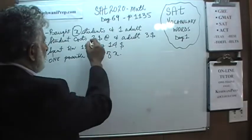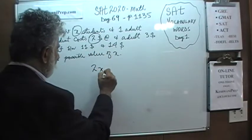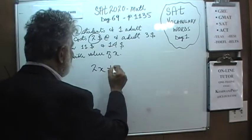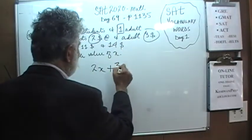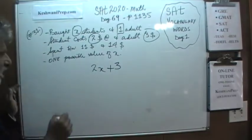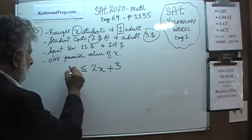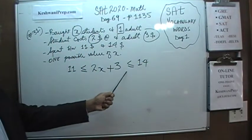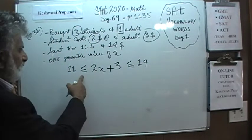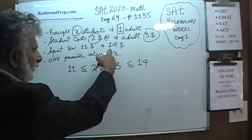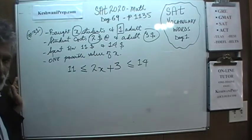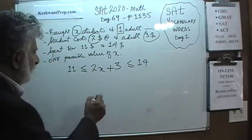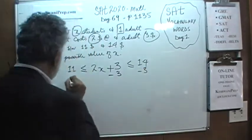If we are going to buy X students and each one of them cost $2, we are going to spend 2 times X dollars on the student tickets. We are told that we are going to buy one adult which costs $3. And this amount of money that we spend has to be between $11 and $14. Let's subtract 3 from the entire inequality.